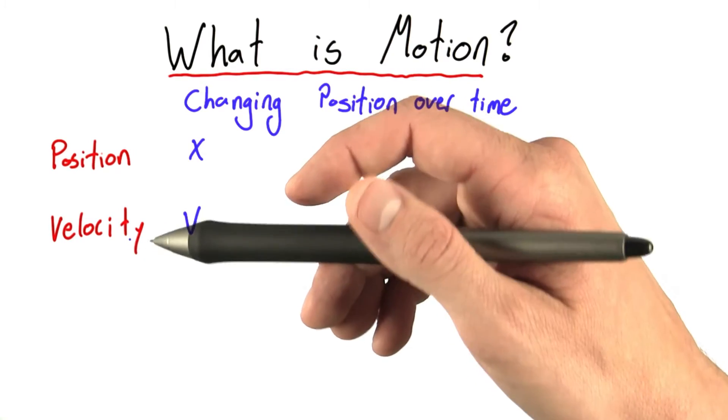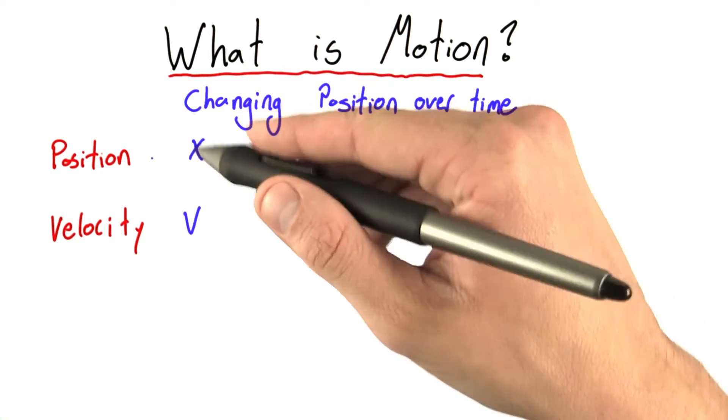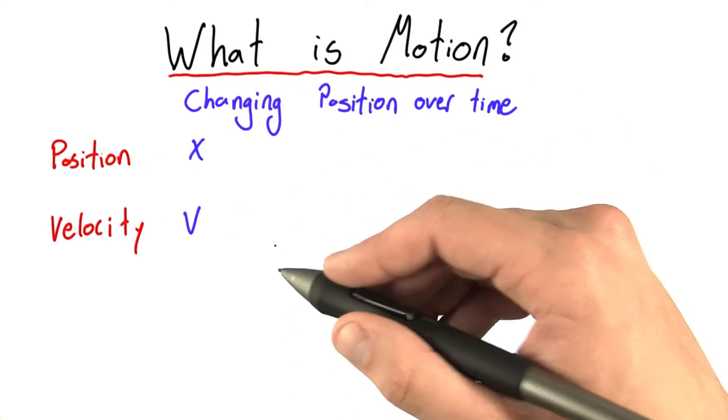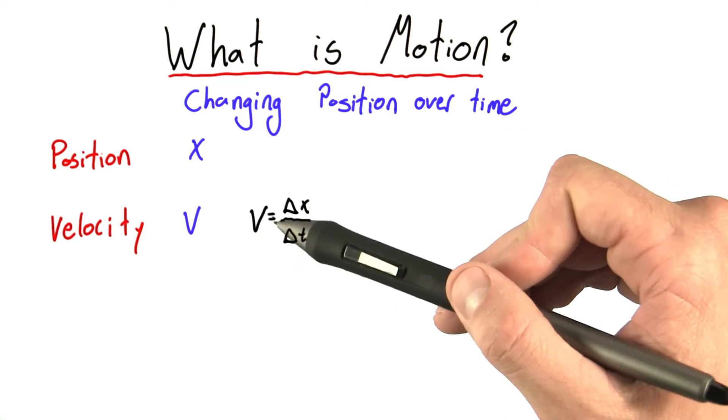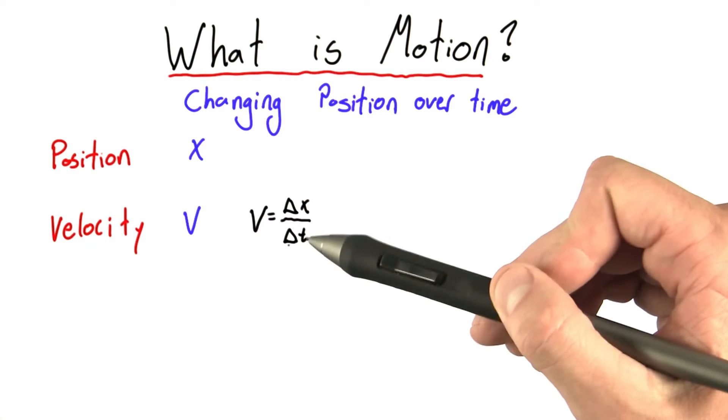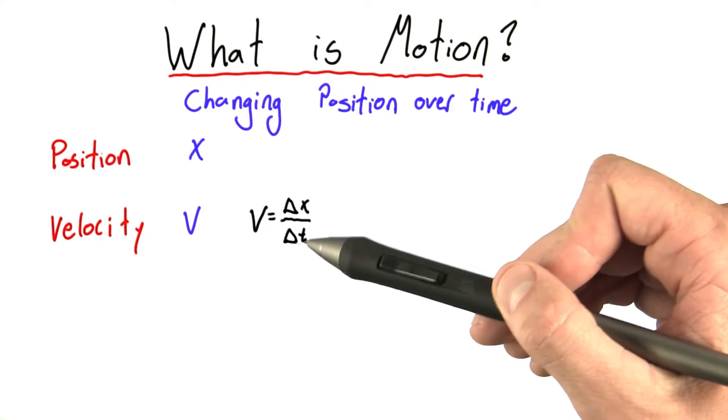Now, we just said that measuring an object's velocity is somehow measuring how fast its position is changing. Well, we can write that with an equation. This equation says that velocity is equal to the change in x over the change in time, the change in position over change in time.